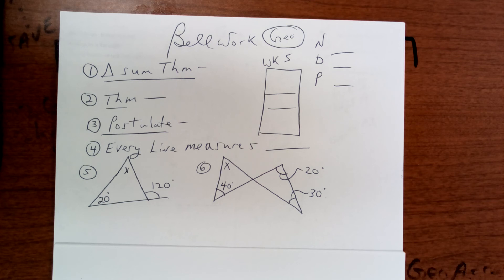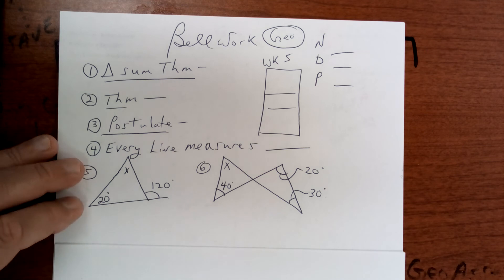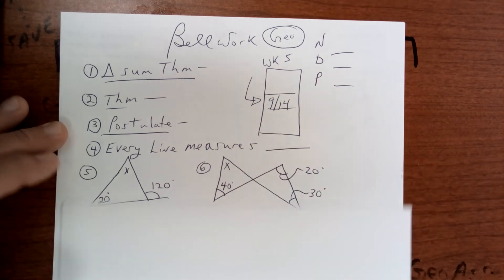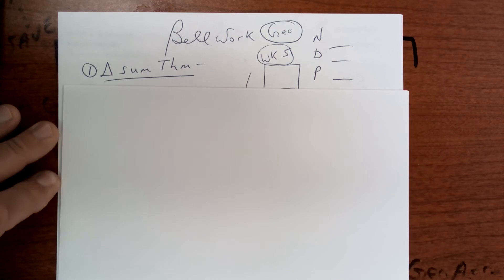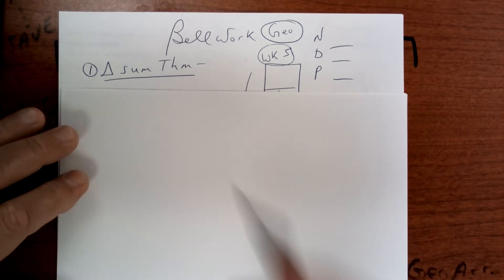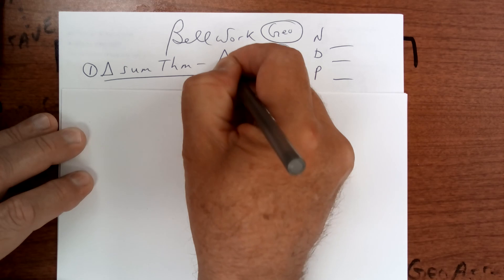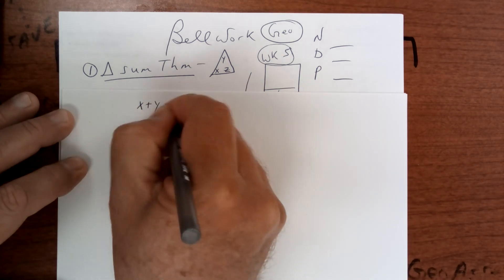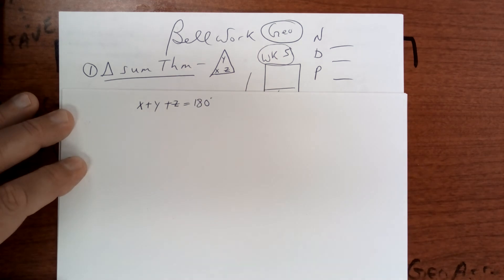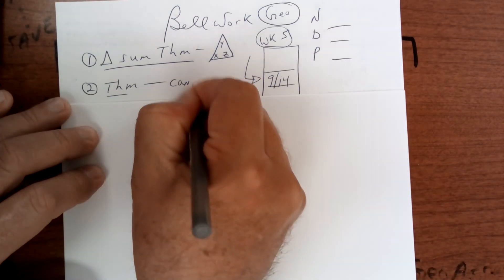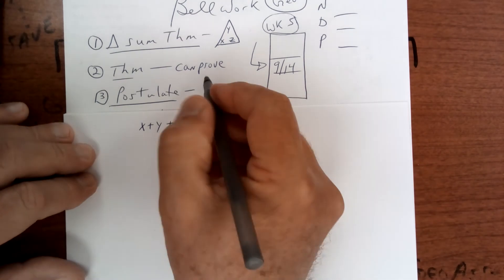Good morning, we're in week five starting section 2.3. Today's work is Tuesday. Make sure you have week five and turn this in at the end of the marking period. The triangle sum theorem says that the sum of the angles of a triangle add up to 180 degrees, so X plus Y plus Z is equal to 180 degrees. The theorem is something you can prove; a postulate is something you accept without proof.